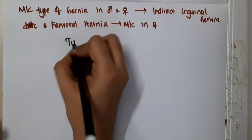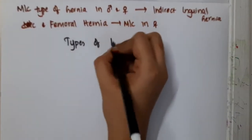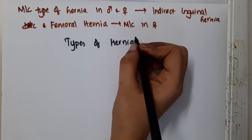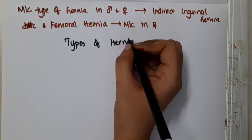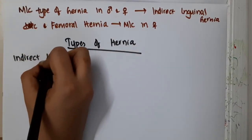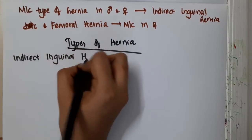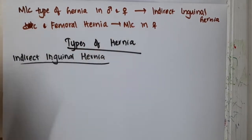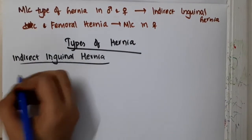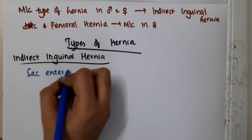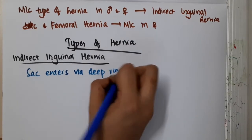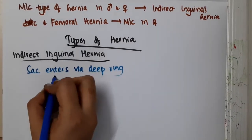Hello friends, let us now learn some important types of hernia. In the types of hernia, we will see some important points about direct inguinal hernia. If you see indirect inguinal hernia, here the sac will enter via the deep ring. If the sac enters via the deep ring, we call it as indirect inguinal hernia.